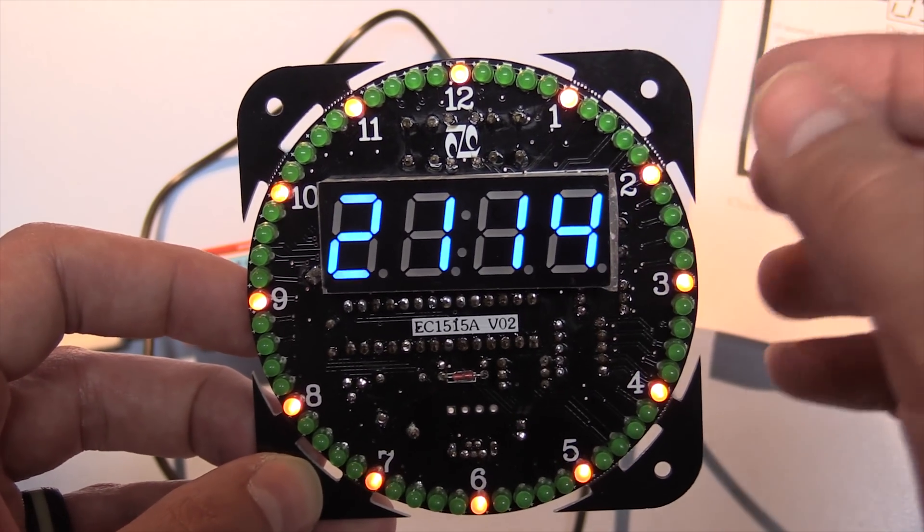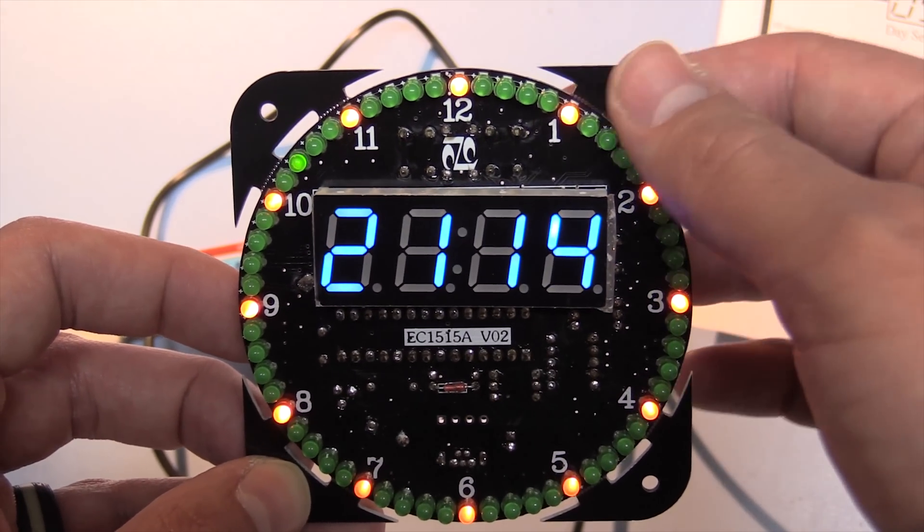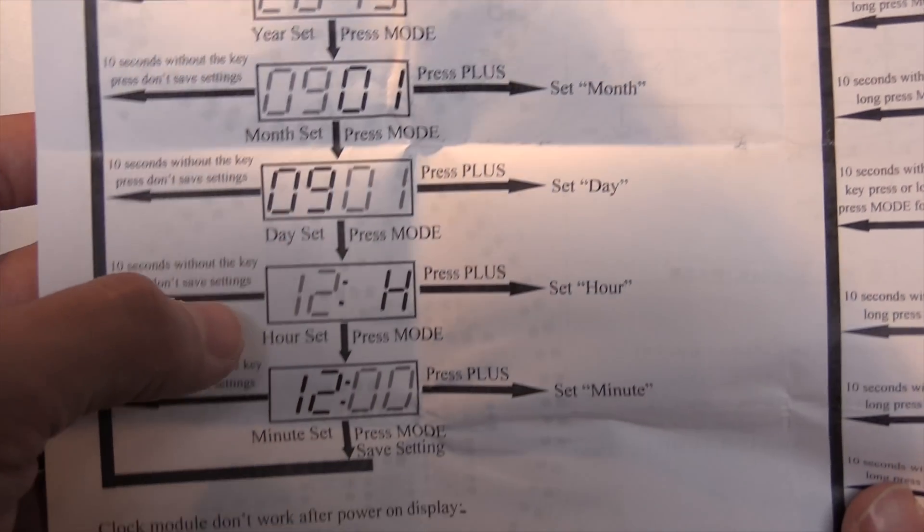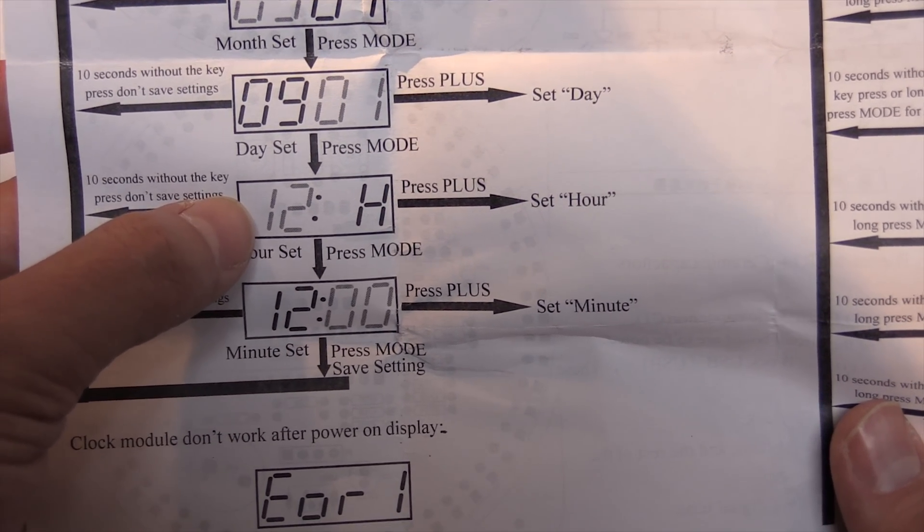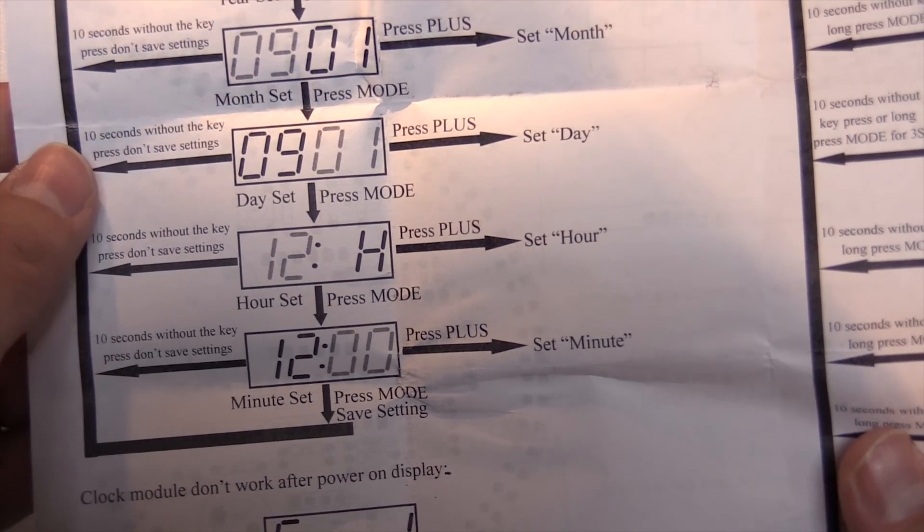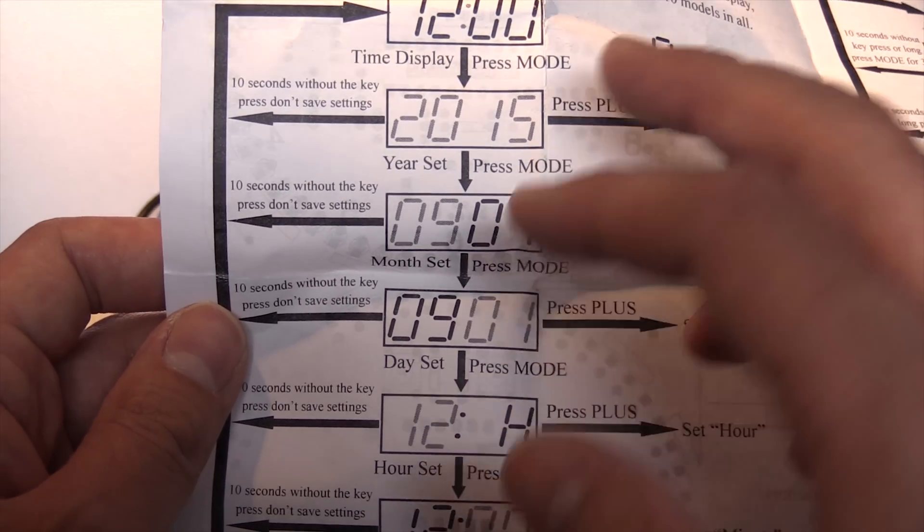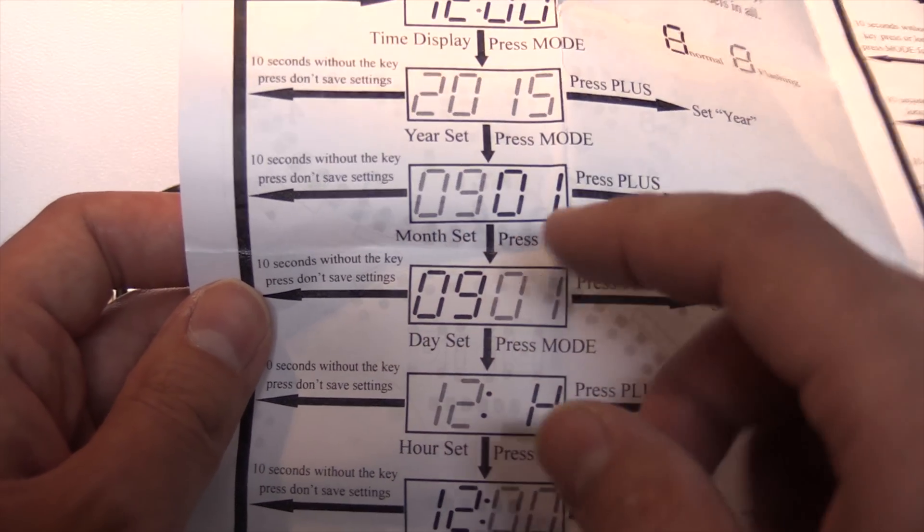So it's actually relatively straightforward to use, you just use the mode button to cycle between setting the year, the month, the day, the hour of the day, and then the minute of the day.